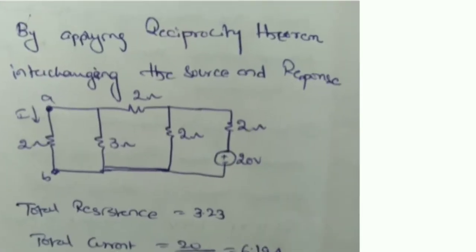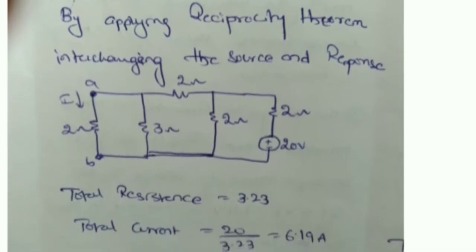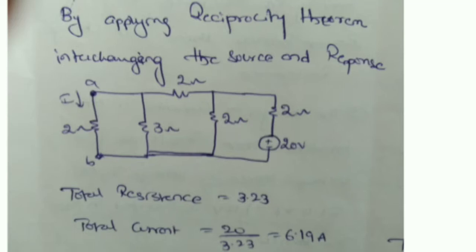In case 2, by applying the Reciprocity Theorem — interchanging the source and the response — the voltage source moves to the CD branch and the current response is measured in branch AB. The total resistance here is: 2Ω in parallel with 3Ω, in series with 2Ω, again parallel with 2Ω, and in series with 2Ω — giving a total resistance of 3.23Ω. The total current is 20 divided by 3.23, which equals 6.19 amperes.